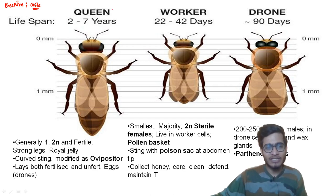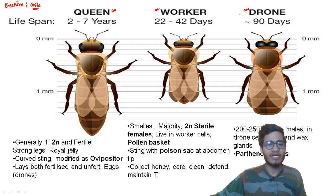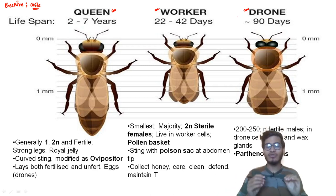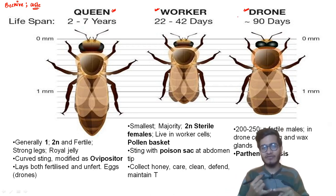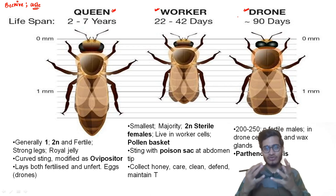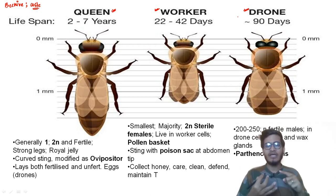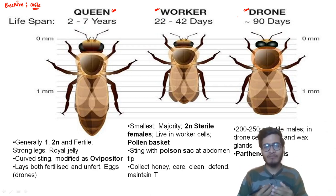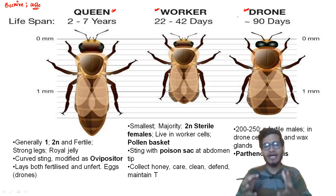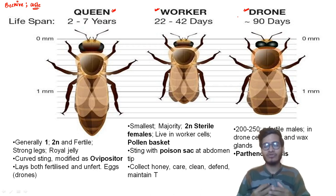In bees, there is differentiation: some are called queen, some are called workers, and some are called drones. There are many differences among these three — their life duration differs, their structure and size differ, their working habits differ, and the food they eat and the place they live also differ.